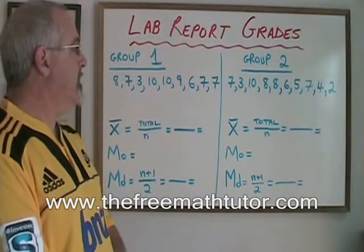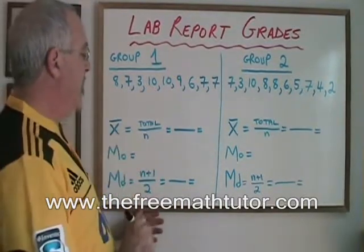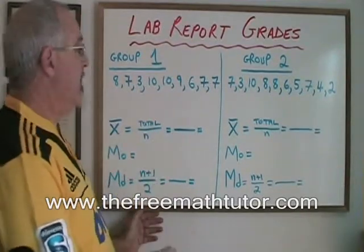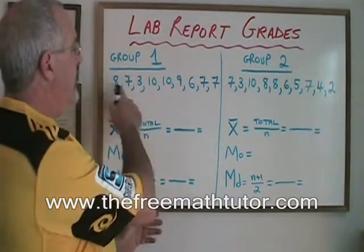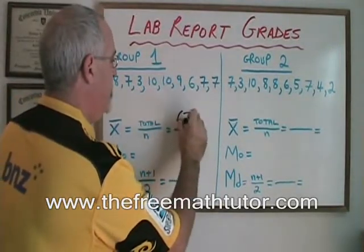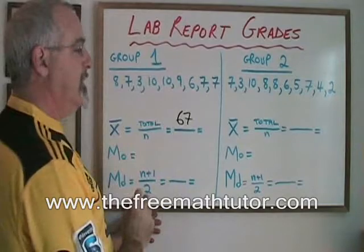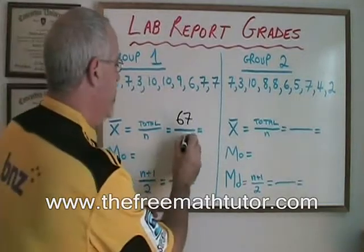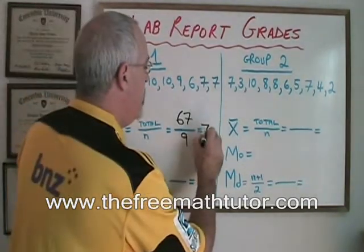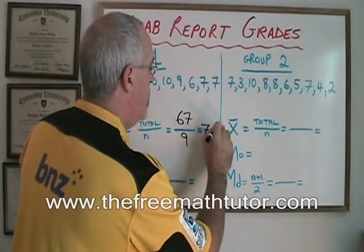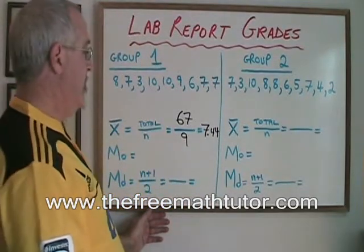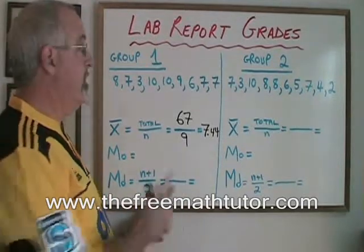For the first group, let's do the mean. The mean is equal to the total over n, the sample size. The total of all of these grades, if I add them up, is 67, and there are 9 grades in the group. 67 divided by 9 gives me 7.44, rounding to the nearest hundredth. The mean is 7.44 for Group 1.